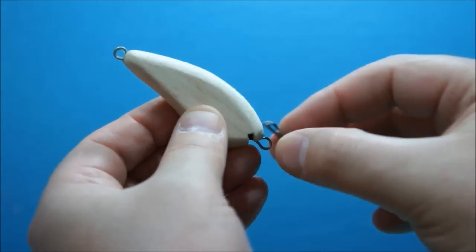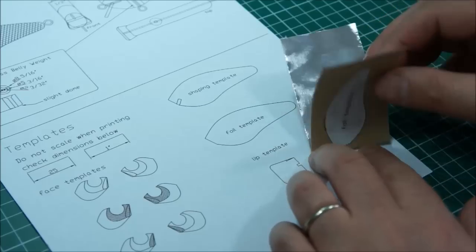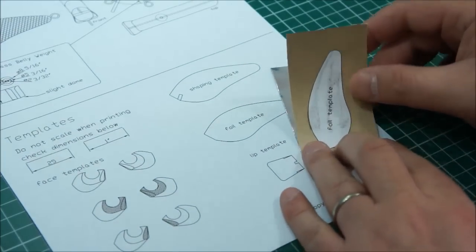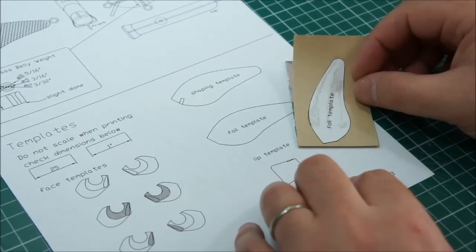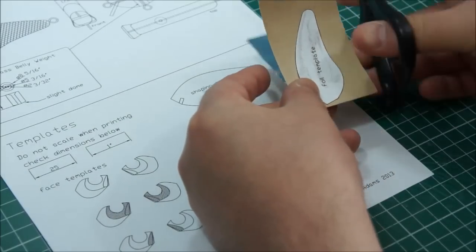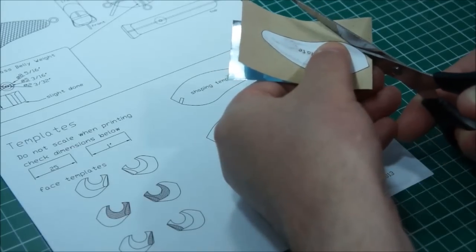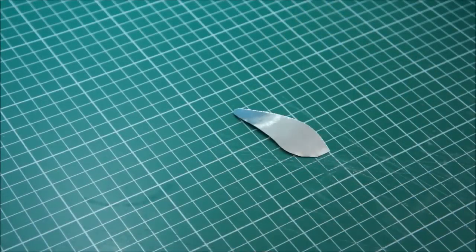To make the foil that covers the sides, I've folded over a piece of 2-inch aluminum tape. I've taken the template, the foil template, and stuck it to the paper backing. Then it's just a case of cutting around, cutting that out. So that's given me the two sides.